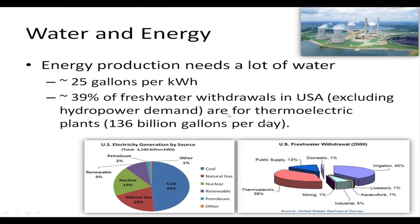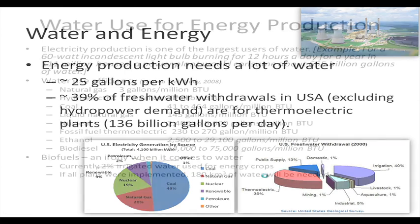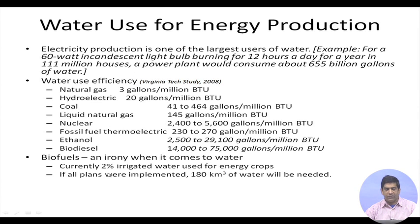If you look at the US electricity mix, coal is 49 percent. In the Indian energy sector, 60 to 70 percent of our base is coming from coal, with not much nuclear, some natural gas, and some renewable sources like solar as well. In terms of fresh water withdrawal, thermoelectric uses about 40 percent — nearly the same as irrigation — so thermoelectric plants use nearly 40 percent of the water.